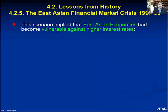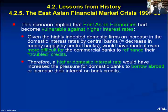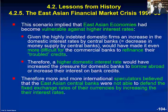This scenario implied that East Asian economies had become vulnerable to higher interest rates. Given the highly indebted domestic firms, an increase in domestic interest rates by central banks would have made it even more difficult for commercial banks to refinance their troubled credits. Therefore, higher domestic interest rates would have increased the pressure on domestic banks to borrow abroad or raise interest rates on bank credits. As a result, more and more international speculators believed that East Asian central banks were not able to defend the fixed exchange rate against the dollar by increasing domestic interest rates.